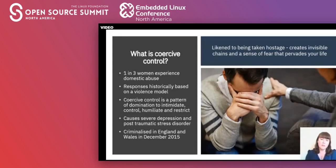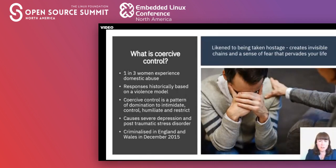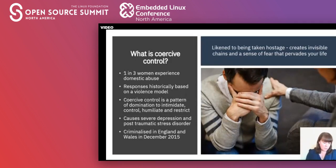Historically, responses to domestic abuse have been built on a violence model equating severity with a number of beatings or injuries. However, the form of abuse that drives most victims to seek outside assistance is where they've been subjected to a pattern of domination that includes tactics to intimidate, restrict and control their behaviour. It's this pattern of domination that is coercive control, and it can be just as devastating as physical violence, often causing severe depression and post-traumatic stress disorder. Experts liken coercive control to being taken hostage — it creates invisible chains and a sense of fear that pervades all elements of a victim's life.